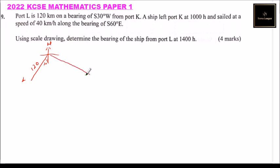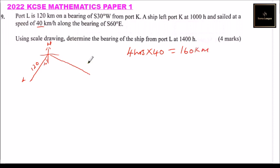From there, the ship traveled from South to East at 60 degrees. Since the ship was traveling at 40 kilometers per hour, we need to know how many hours it traveled. From 10:00 to 14:00 — that is 4 hours — multiplied by 40 kilometers per hour gives us 160 kilometers. So the ship had traveled 160 kilometers from port K.